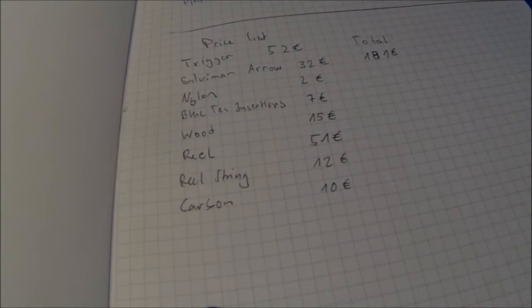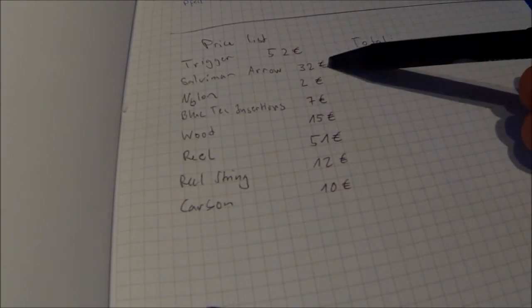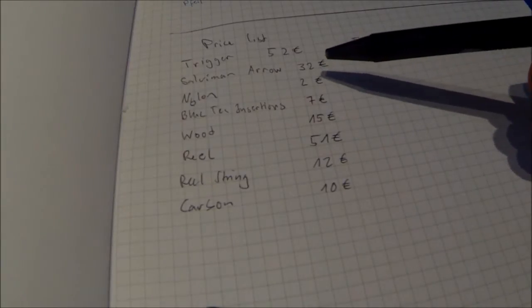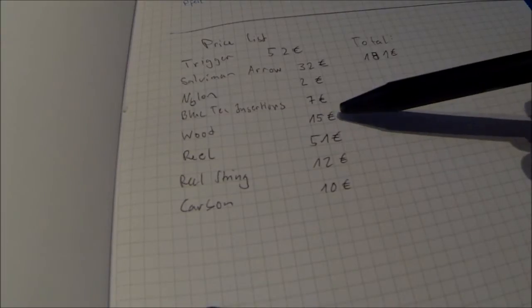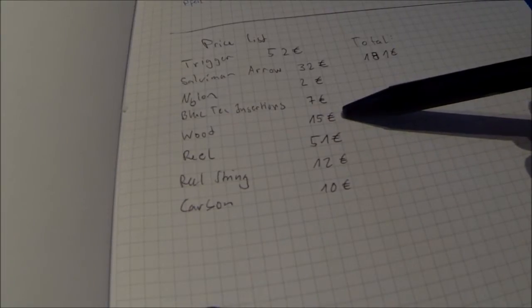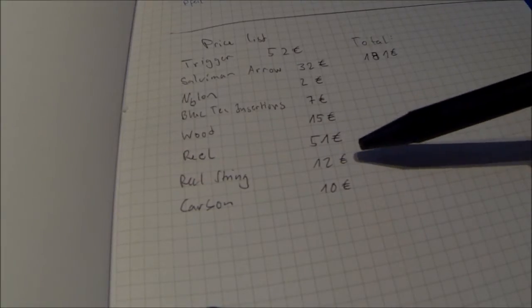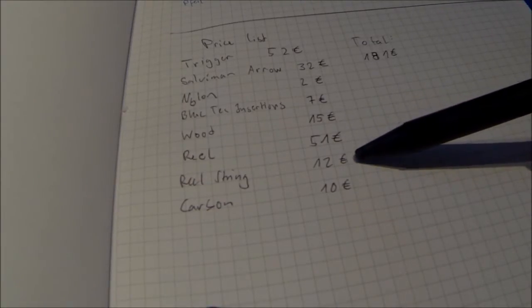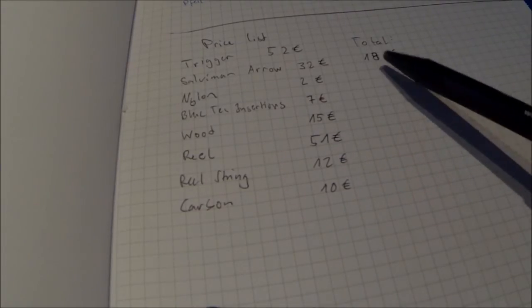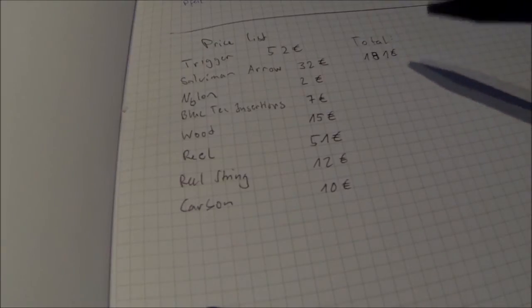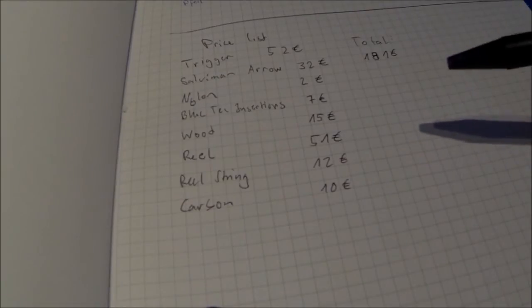Here's the price list. I paid 52 euros for the trigger, 32 for the arrow, 2 euros for the nylon, 7 euros for the insertions. The teak wood cost about 15 euros, the reel was 51, the reel string I'll buy for about 12 euros, and the carbon was 10 euros. That's 181 euros altogether. I think when the gun is finished, that's gonna be a really nice price for a really good gun.